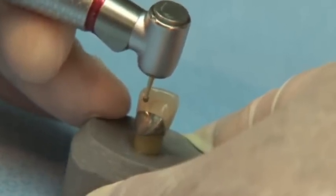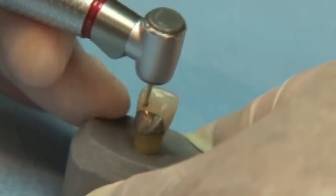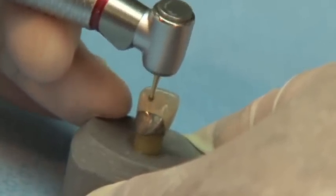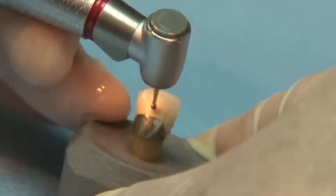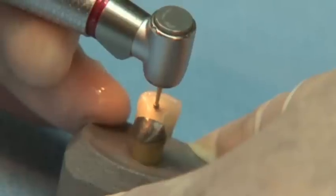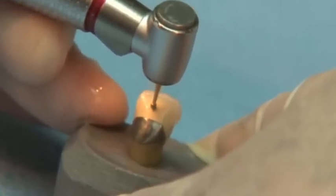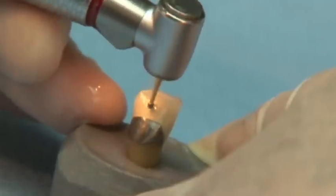Creating proper access for endodontic treatment requires the use of a burr that has the ability to cut through porcelain, composite and metal. The Great White Series Carbide Burr is designed to cut through porcelain fused to metal crowns without shattering the porcelain or breaking the burr.